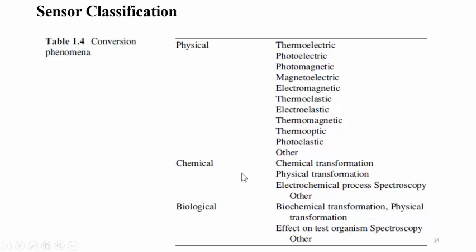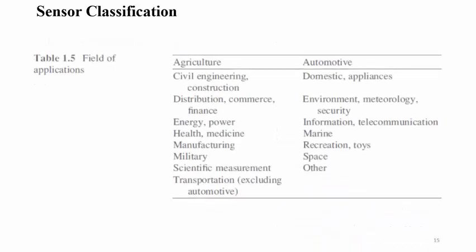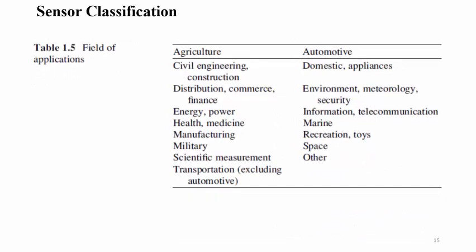Depending on chemical reaction or chemical conversion, classifications include physical transformation, electrochemical processes, and spectroscopy-based applications. For biological applications, biochemical transformation and physical transformation are considered, where the effect on the test organism and spectroscopy are observed.